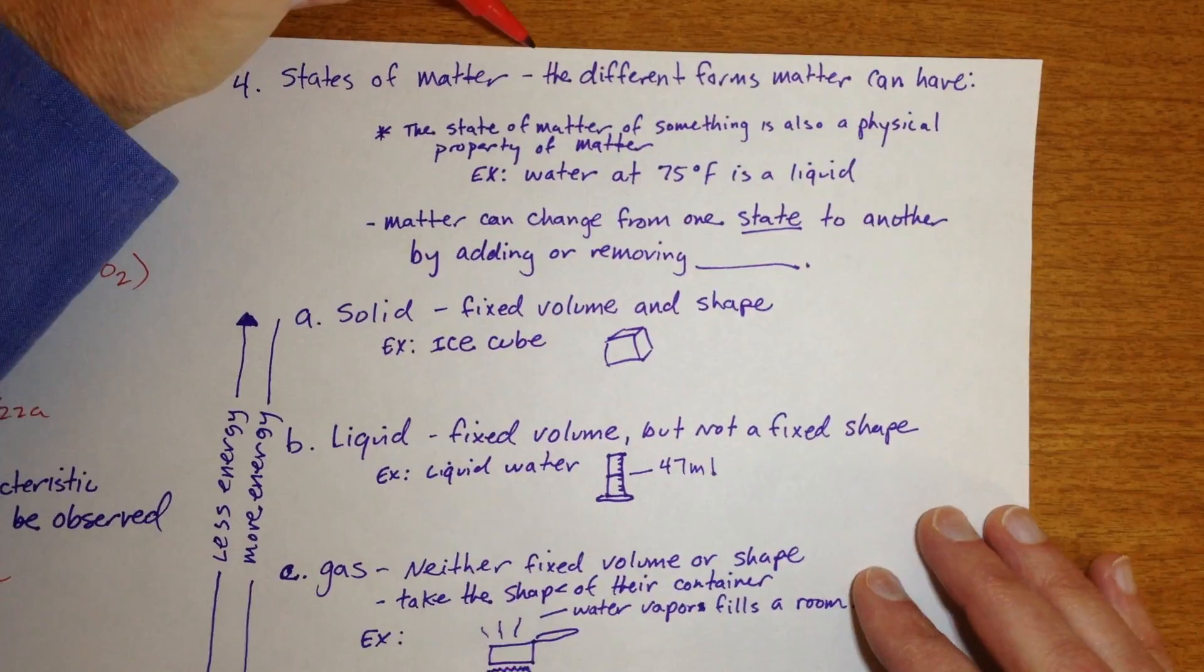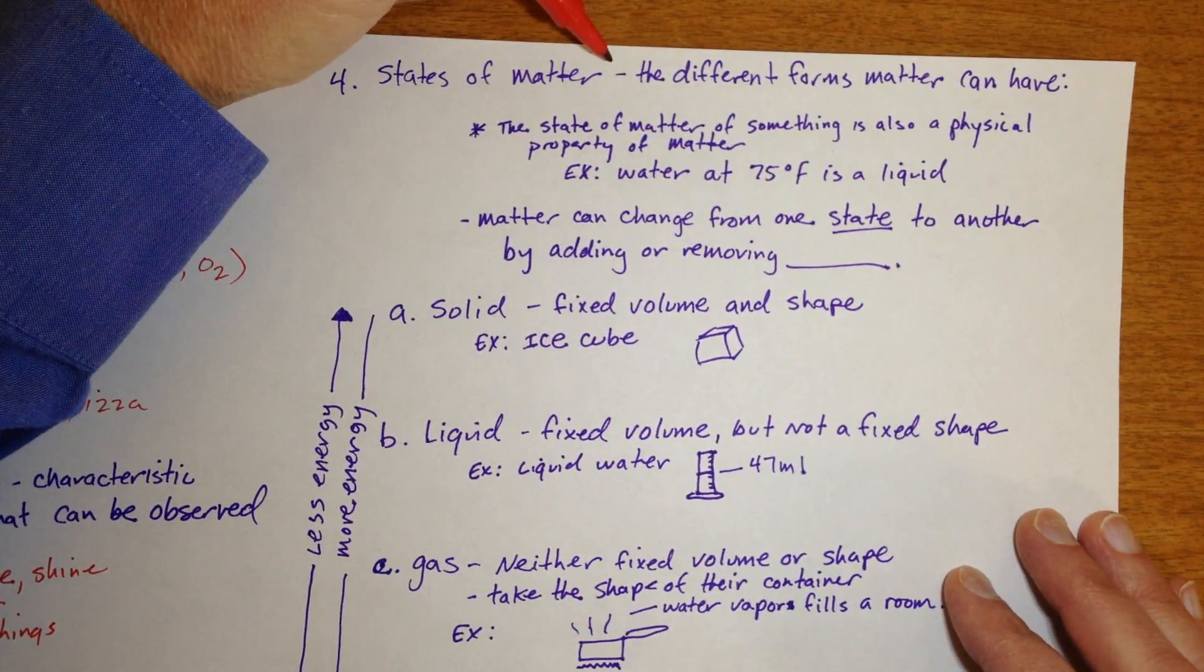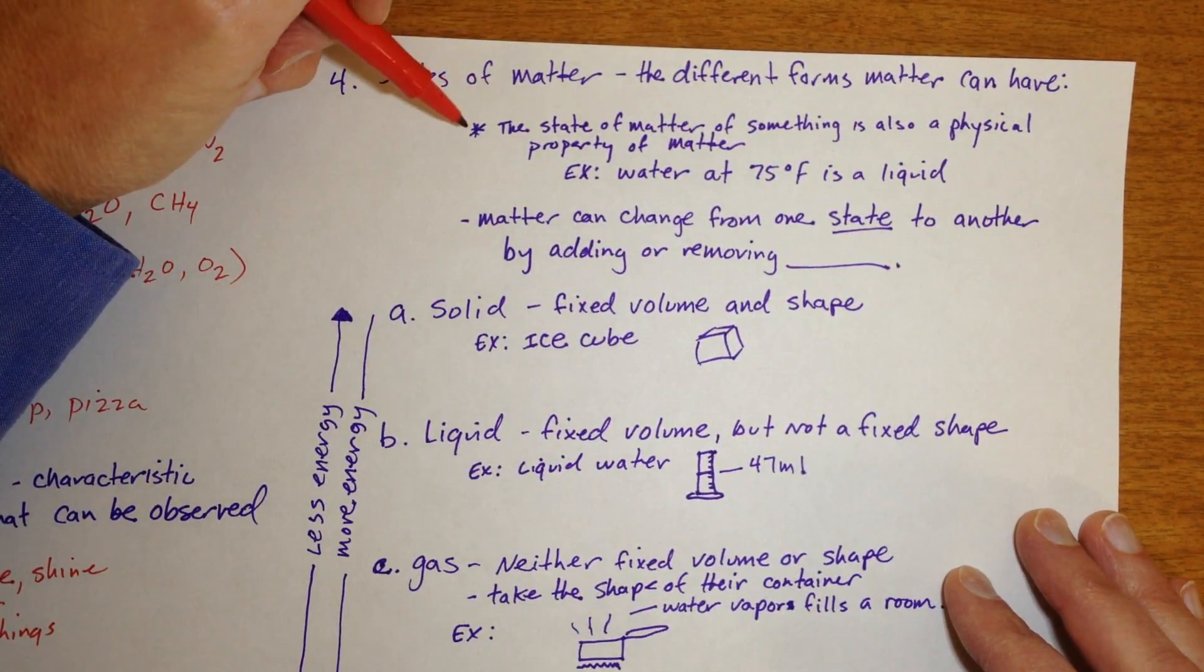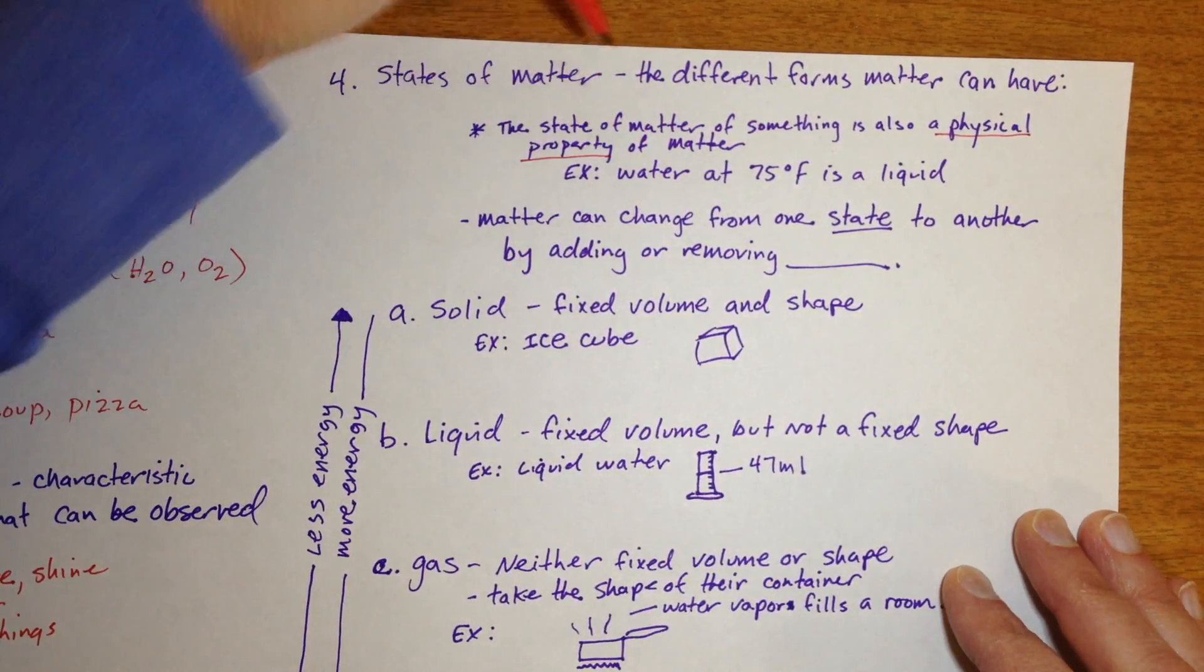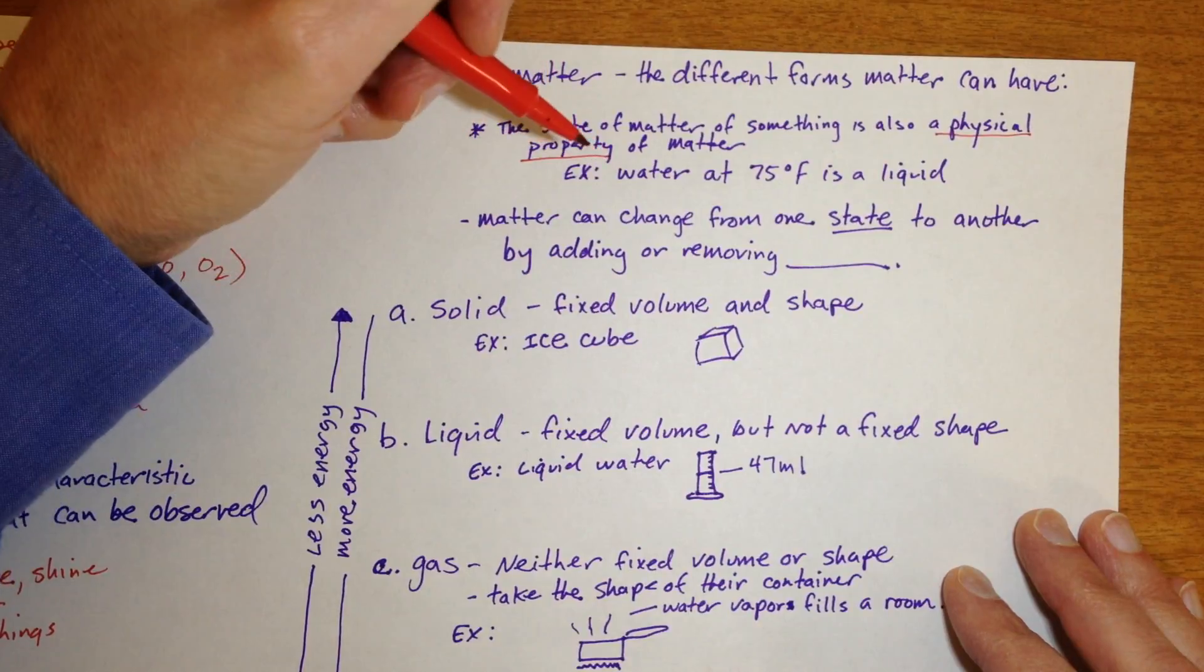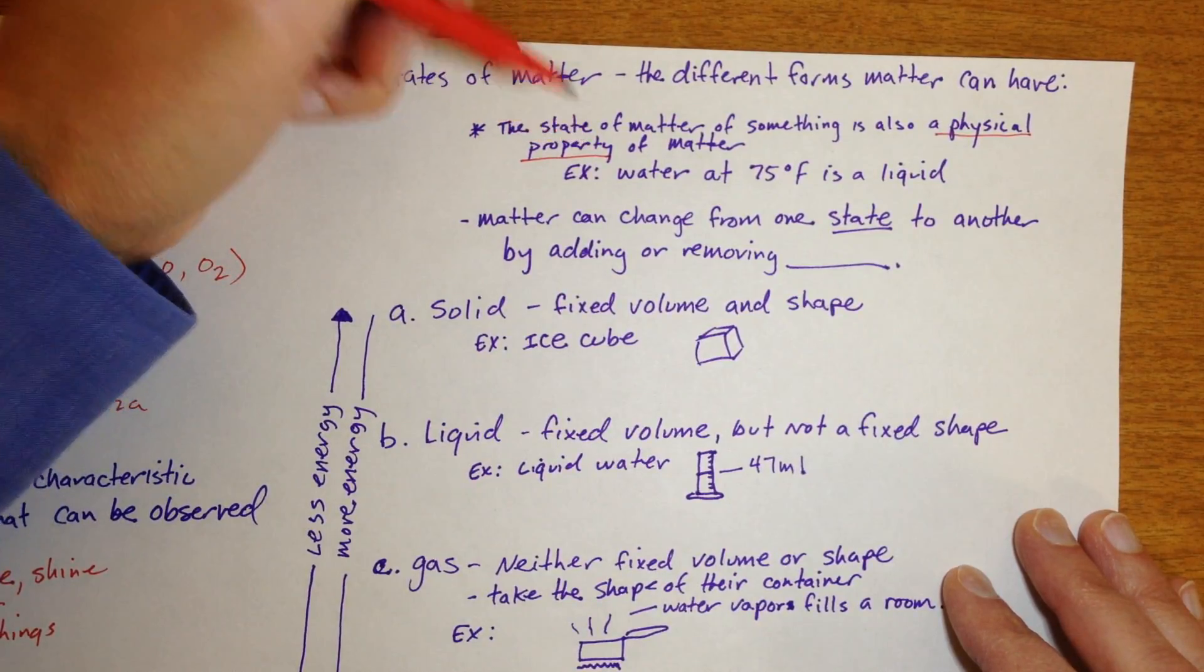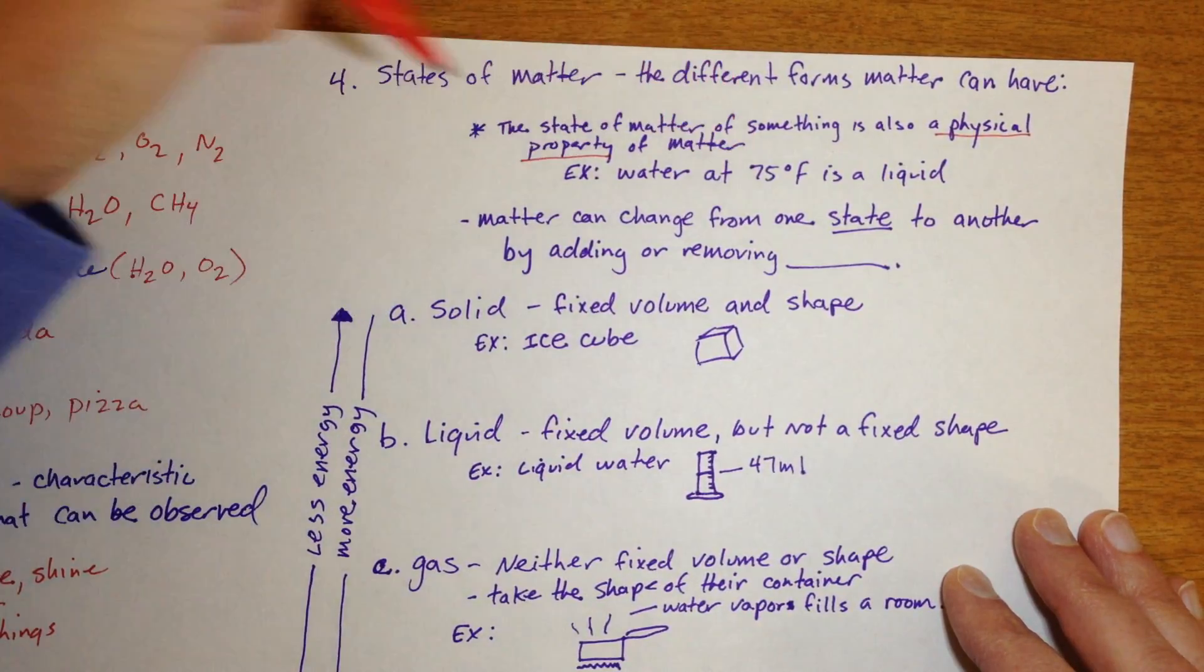So state of matter is defined as the different forms of matter, different forms matter can have, or matter can take, and again, a state of matter is a physical property. So an example of water at 75 degrees Fahrenheit is a liquid, its state of matter is that it's a liquid.